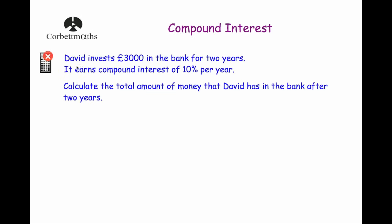So David invests £3,000 in the bank for two years and it earns compound interest of 10% per year. Calculate the total amount of money that David has in the bank after two years. For a non-calculator compound interest question, we're going to work out 10% and add that on to find how much David has after one year, then work out 10% of that new amount and add it on for year two.